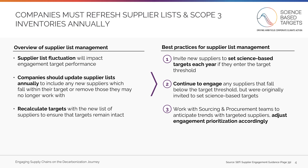As a best practice, you should invite any new suppliers within your updated target threshold to set science-based targets each year. Further, if a previously engaged supplier falls out from your supplier engagement target, it is best practice to continue engaging them to set a target. Finally, you should work with your sourcing and procurement teams to understand any major trends relating to suppliers within your target and adjust your engagement strategy accordingly.